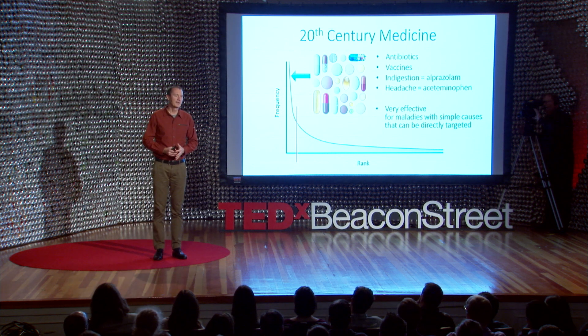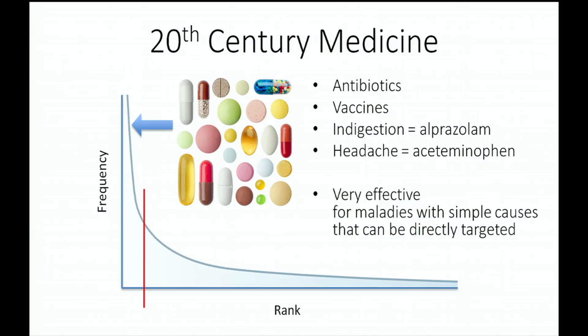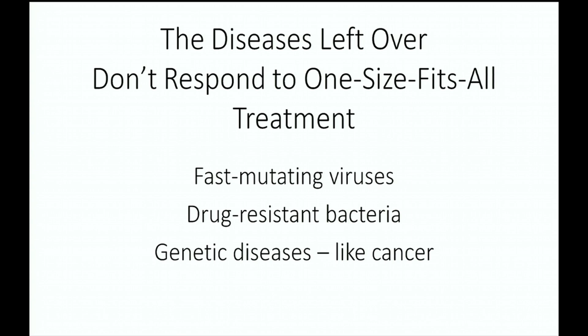20th century medicine has done a miraculous job of solving problems for maladies in the head of that curve. We have antibiotics, vaccines, Xanax, Tylenol, and hundreds of different drugs that tackle diseases with a single cause where a single molecular mechanism can solve the problem. That's done a remarkable job and elevated us. But perhaps many of you have the sense, as I do, that we've hit a bit of a stumbling block in the 21st century in terms of making progress with medicine. The diseases left over — a lot of people don't respond to a one-size-fits-all solution. They need specific solutions for the particular problem we're dealing with.